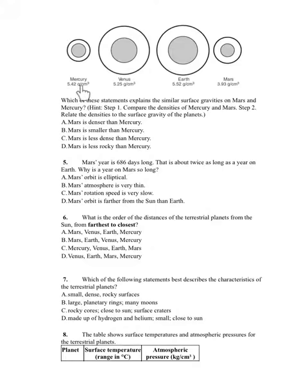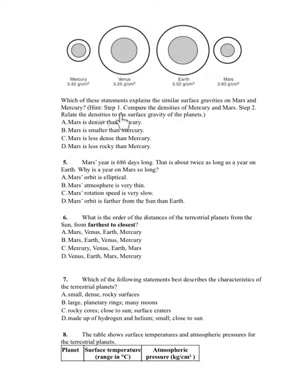Number 4. Mercury: 5.42 grams per cubic centimeter. Venus: 5.25 grams per cubic centimeter. Earth: 5.52 grams per cubic centimeter. Mars: 3.93 grams per cubic centimeter. Which of these statements explains the similar surface gravities on Mars and Mercury? Hint — Step 1: Compare the densities of Mercury and Mars. Step 2: Relate the densities to surface gravity of the planets. A. Mars is denser than Mercury. B. Mars is smaller than Mercury. C. Mars is less dense than Mercury. D. Mars is less rocky than Mercury.